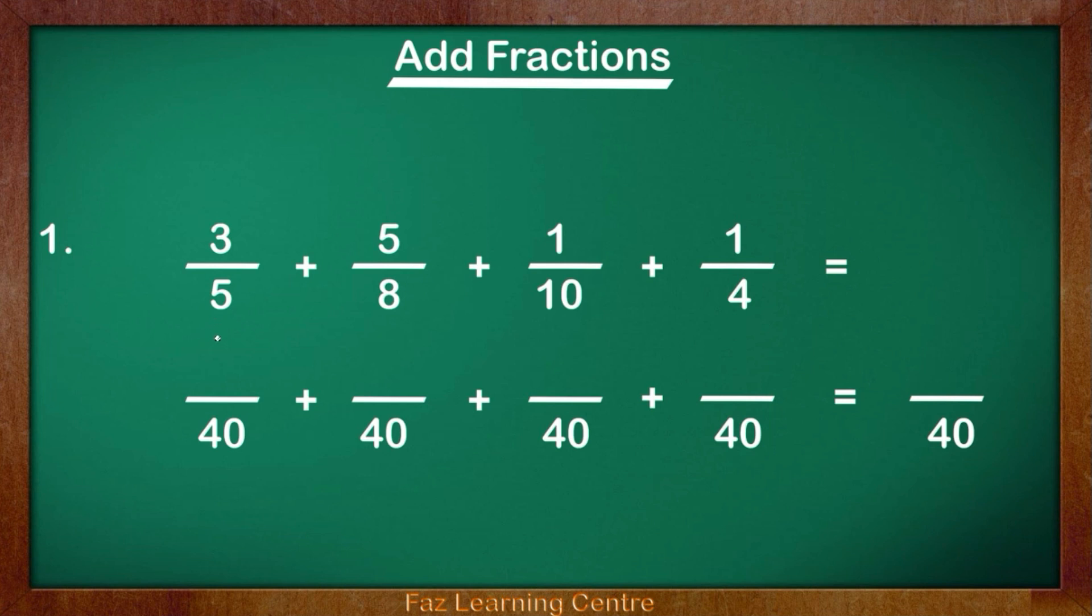In order to add fractions we need to find a denominator which will go into 5, 8, 10, and 4. A multiple which will go into these, and the multiple is 40. So let's see how 5 multiplied by what makes 40. So 5 times 8 equals 40.